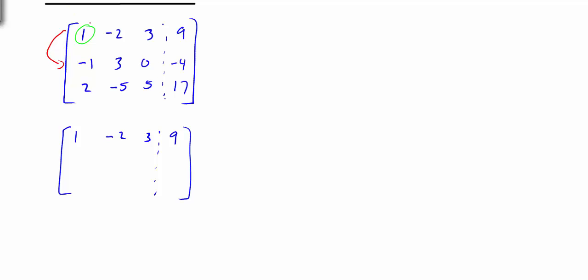If we add these together: 1 and negative 1 gives 0; negative 2 and 3 gives 1; 3 and 0 gives 3; 9 minus 4 gives 5.